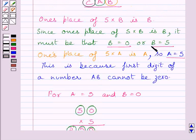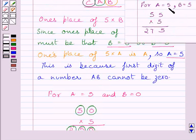Note that, another possibility of B equal to 5 fails as, for A equal to 5 and B equal to 5, we get 55 multiplied by 5 as 275. Now, here, these two values of A are not equal to each other. So, B is equal to 5 is not the correct value of B.